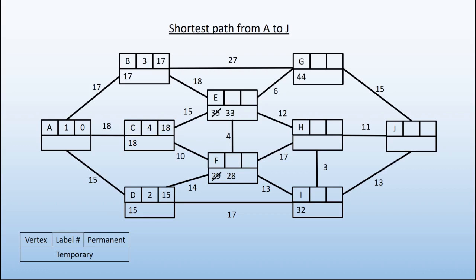Looking at the vertices without a permanent label, we see that F has the smallest value. This is our fifth, and so it has the permanent label of 28.